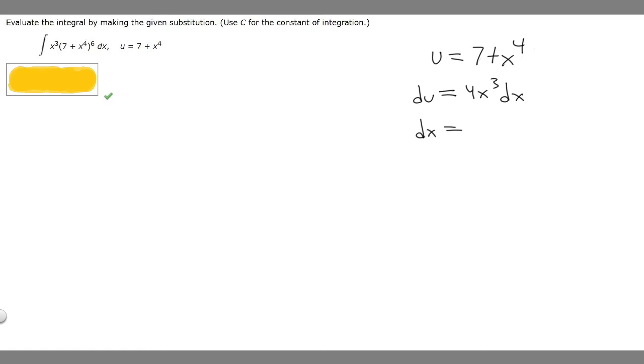Then what we want to do is solve for dx. We can divide both sides by 4x cubed. That would give us dx equals du divided by 4x cubed.